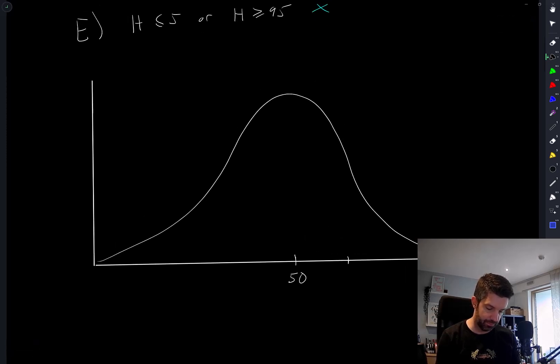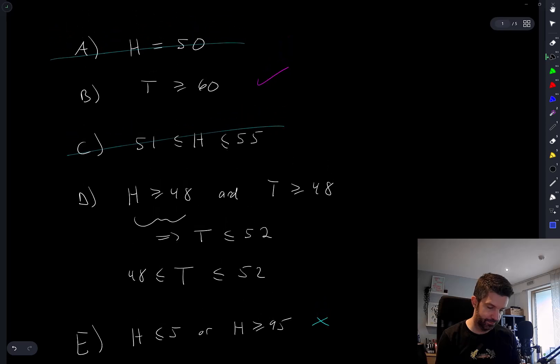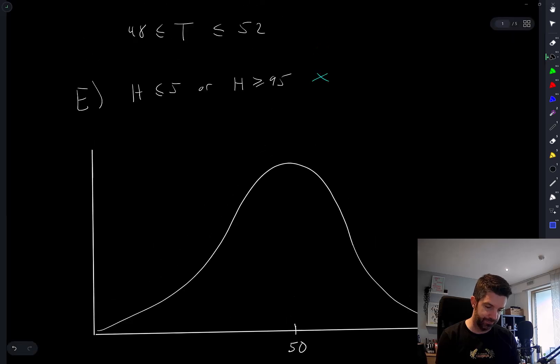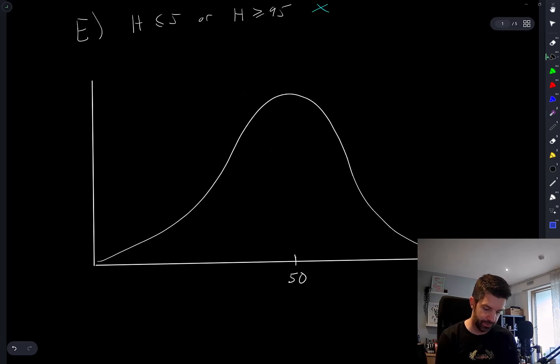I mean, I'm just ballparking things here. So T greater than or equal to 60, if this is at 60, and I don't think it is. I think where's the one standard deviation? Where's the inflection point of a bell curve? I don't remember. But the point is, this is a very small range comparatively. From 48 to 52 is just around there. Whereas above 60 is this whole area.